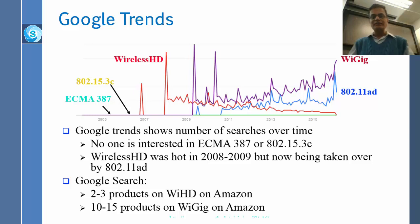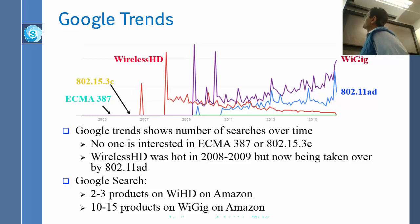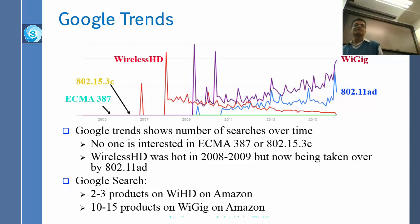Here is the Google Trends data — another thing I do to figure out where the world is going. This was done last week. You can see ECMA, which was one of the first standards, is going nowhere — you cannot even see that color in the line, it is just zero. 802.15.3C is somewhat yellow and again I cannot see that line mostly. Most of what I see is Wireless HD, which was really high in 2009 and now coming down to zero. WiGig and 802.11ad are the same — WiGig is the product name for 802.11ad — and those are the things people are searching for.